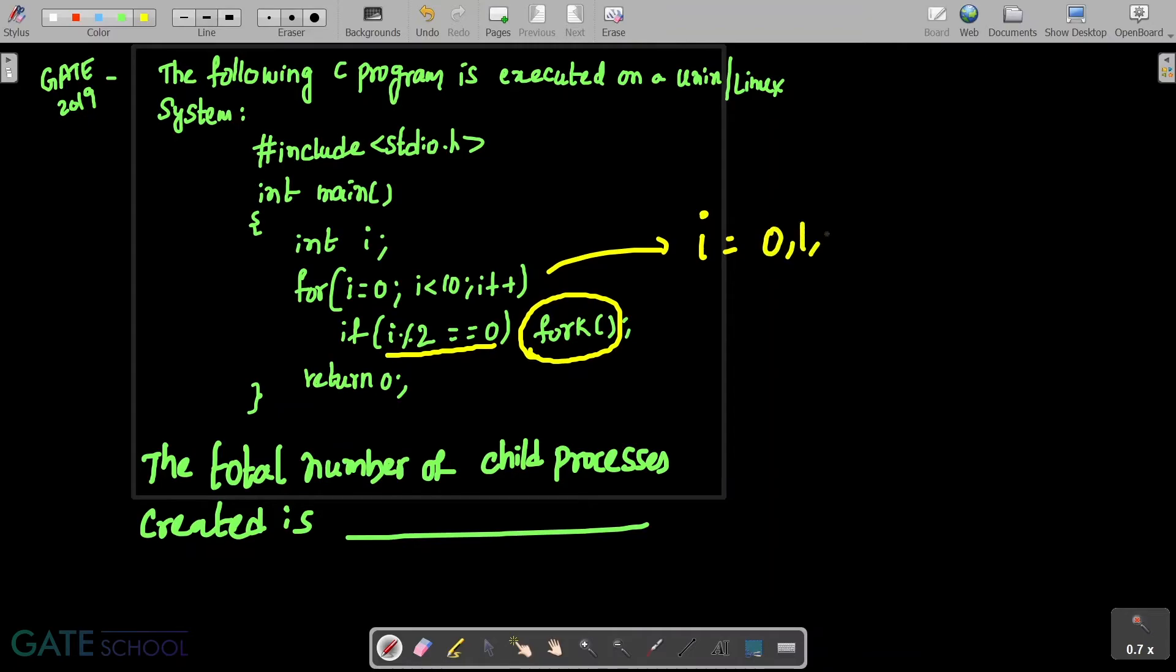If you observe this outer for loop, it's going to iterate for different values like 0, 1, 2, 3, 4, 5, 6, 7, 8, 9. Now out of all these values, for which values of i will this conditional expression be evaluated to true?